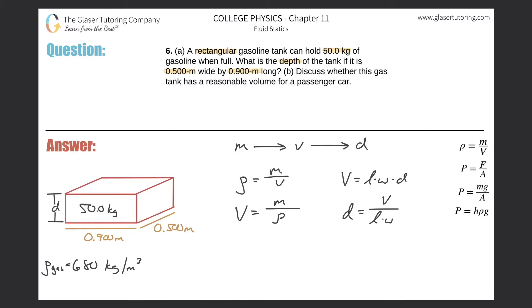All we need to do is plug everything in. In terms of the units, it's going to be mass over density times length times width. The mass is 50, the density is 680, the length is 0.9, and the width was 0.5. Now we just calculate.